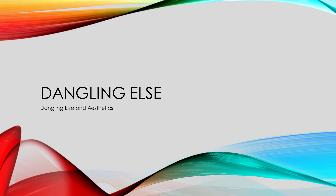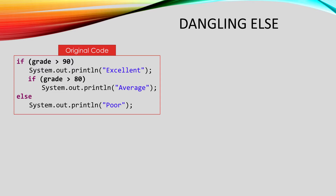There are some more details about conditionals that we should talk about. If you don't use the curly brackets, sometimes your indentation can confuse you. This code looks like the else is paired with the first conditional. While that's what the indentation implies, the compiler actually ignores indentation entirely. That means that we need to know how the compiler decides which if to pair that else with.